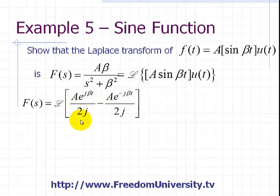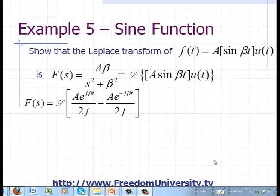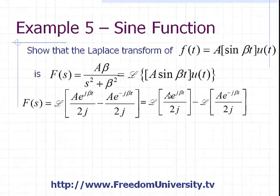We saw in the previous slide that we broke up this function into two parts, and we notice that we have exponentials. We know the Laplace transform of the exponential where alpha equals j·beta, where the alpha term is anything in front of the t in the exponent. In this case alpha equals j·beta for the first exponential, and for the conjugate term alpha equals minus j·beta. Using the linearity property, we take the Laplace transform of each term: the first gives 1 over s minus j·beta, and the second gives 1 over s plus j·beta.